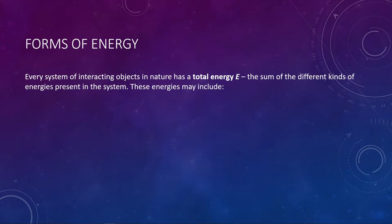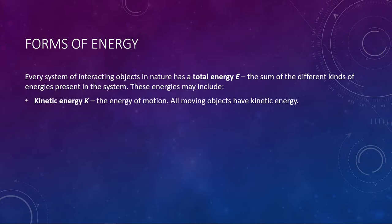When we say we have a system of interacting objects, that system is going to have a total energy represented by the capital letter E. Total means the sum — you add up all the different energies that are there to get this total. There are many different kinds of energy. For our purposes, we're going to introduce five of them and only use four. The first and most relevant type of energy is kinetic energy, given by capital letter K.